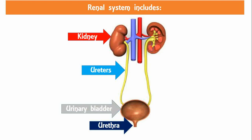The ureter is a tube that carries urine from the kidney to the urinary bladder. There are two ureters, one attached to each kidney. The upper half of the ureter is located in the abdomen and the lower half is located in the pelvic area.